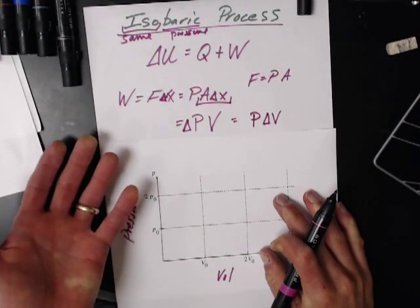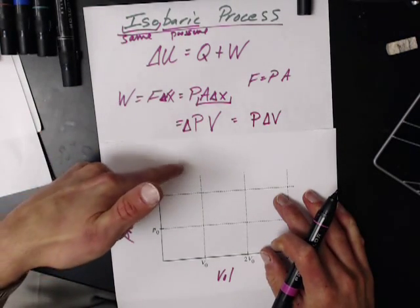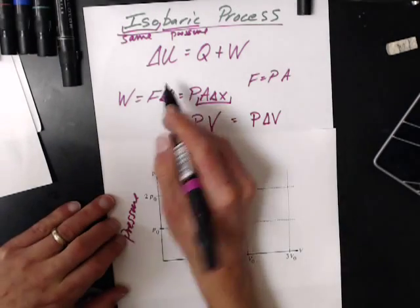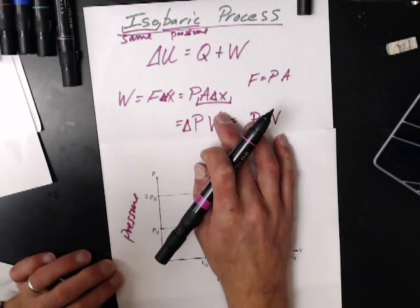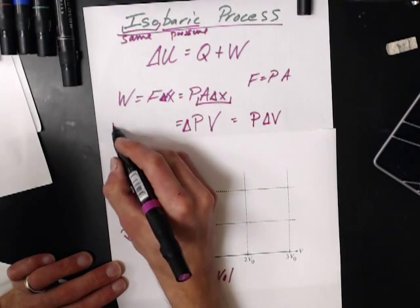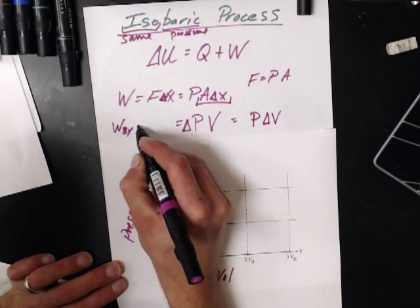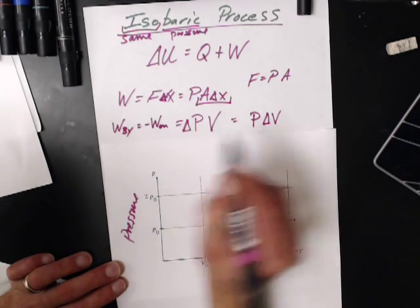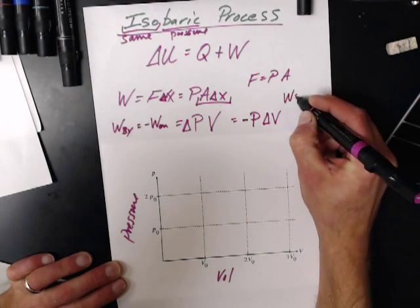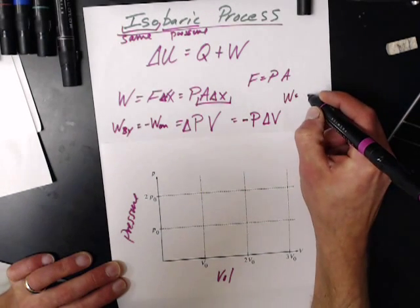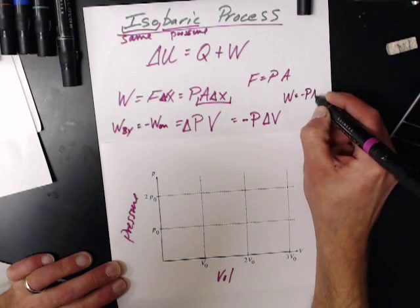But now I want this not from the work done on my system, but by my system. So this is the work done on my system. So I want the work done by my system, which is the negative to the work done on my system, so this needs to be negative. So the work done by a gas is negative P delta V.